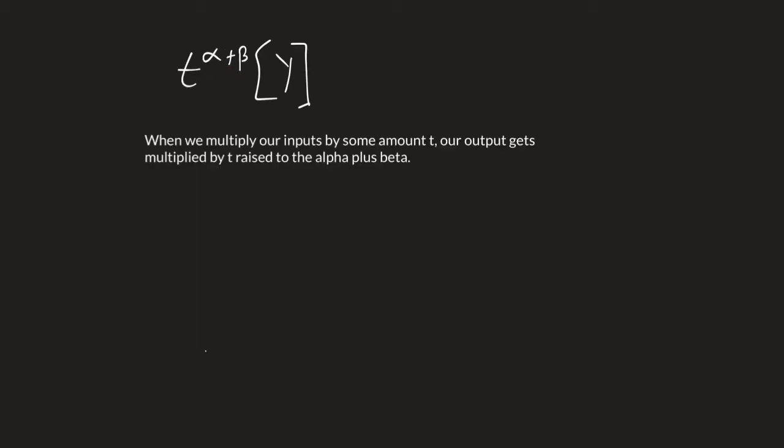This is going to result in three different options. One where alpha plus beta equals one. This is what we call constant returns to scale, meaning that when I multiply my inputs by t, my output is exactly multiplied by t. A lot of times you'll hear this as: if I double my inputs, output doubles.